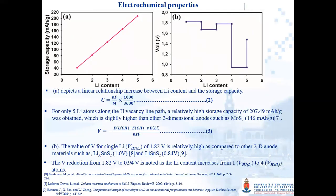On this slide, we present the electrochemical properties of increasing lithium content and hydrogen vacancies on graphane. Fig-A depicts a linear relationship increase between lithium content and storage capacity. Equation two was used to calculate the storage capacity of lithium for all five configurations, and for only five lithium atoms along the hydrogen vacancy line path, a relatively high storage capacity of 207.49 mAh/g was obtained, which is slightly higher than other 2D anodes. Equation three was used to calculate the lithiation potential, while Fig-B shows that the value of the lithiation potential for a single lithium atom of 1.82 volts is relatively high compared to other 2D anode materials. The lithiation potential reduces from 1.82 volts to 0.94 volts as the lithium atom content increases from 1 to 4 atoms.